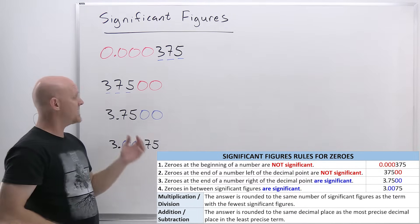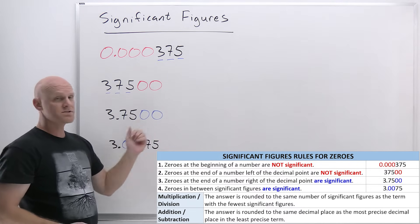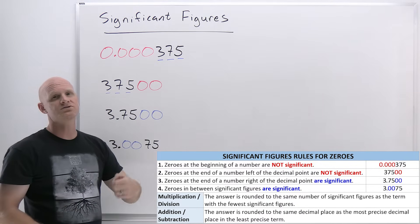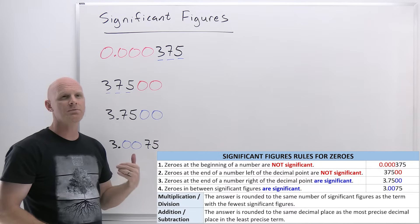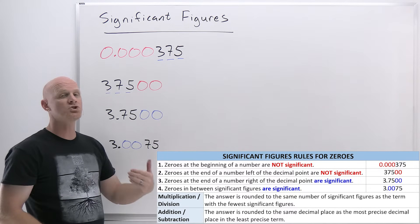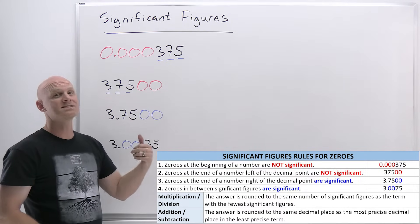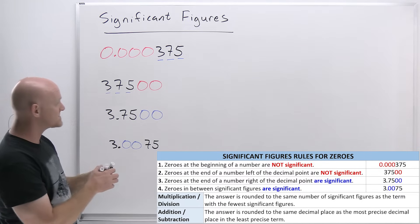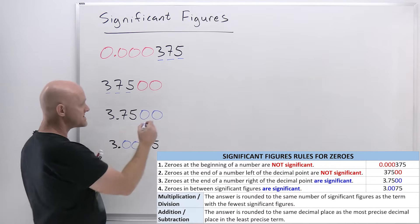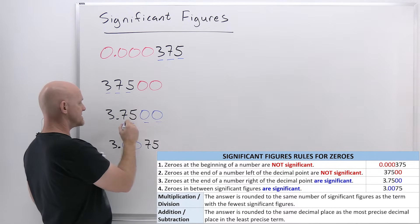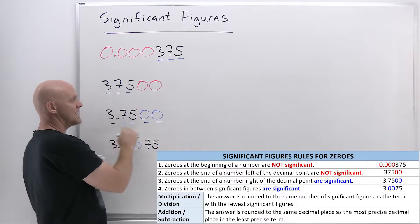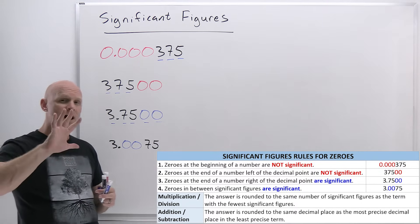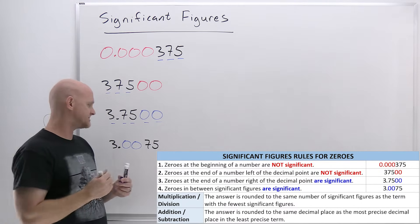However, if a number ends in zeros right of the decimal, those zeros are significant. They tell us something about the degree of precision — the exactness to which we know the number. So the number 3.7500 actually has five significant figures.